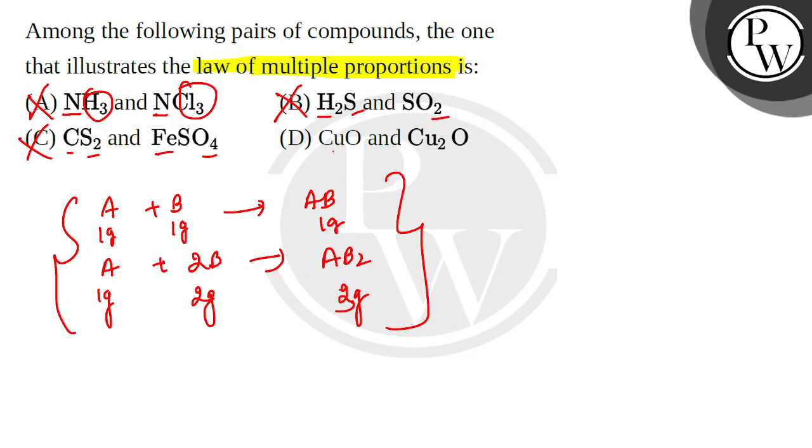And in D, there is copper and oxygen. That means there are two types of elements. So here, the law is justified. So you will see that when you react copper with oxygen, then CuO will be made.